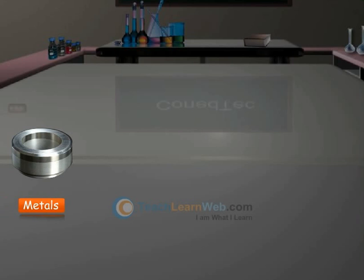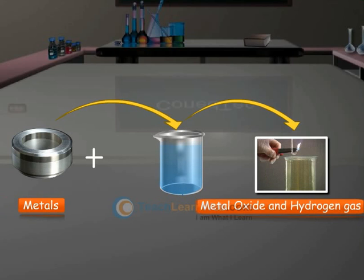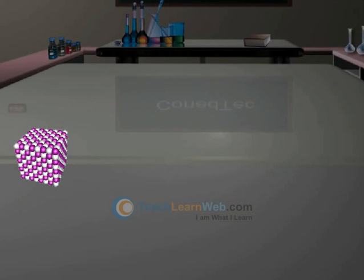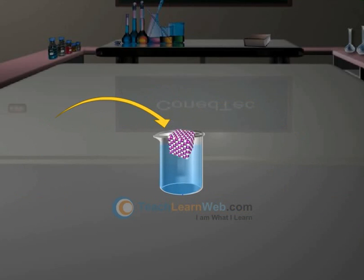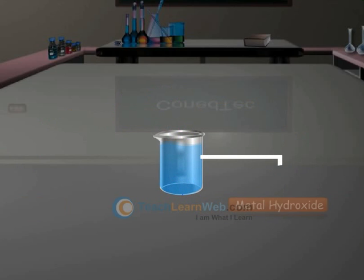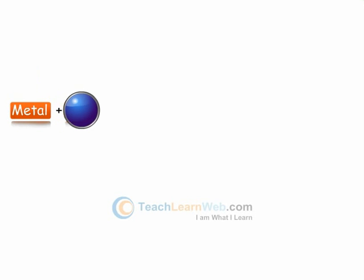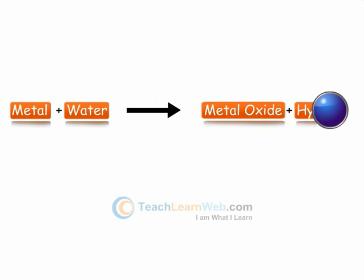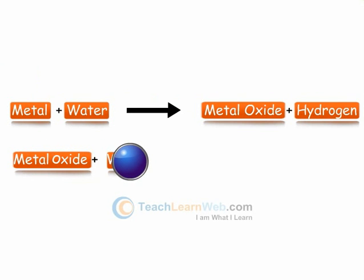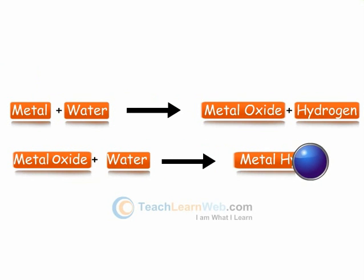Metals react with water to produce metal oxide and hydrogen gas. Further, metal oxides are soluble in water to form metal hydroxide. Metal plus water gives metal oxide plus hydrogen, and metal oxide plus water gives metal hydroxide.